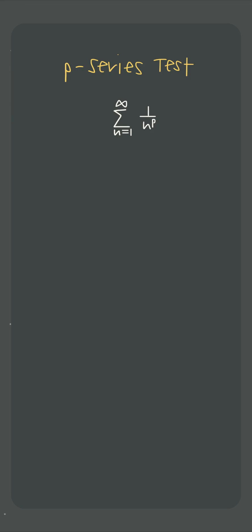How can we use the p-series test to determine the convergence or divergence of a series? Well, all we need is for the series to be in this specific form, 1 over n to the p.